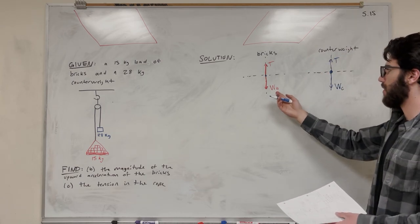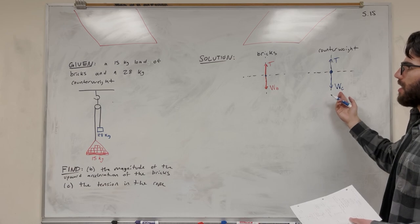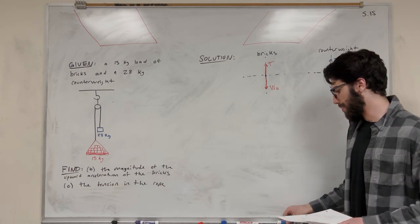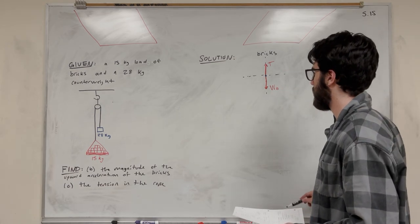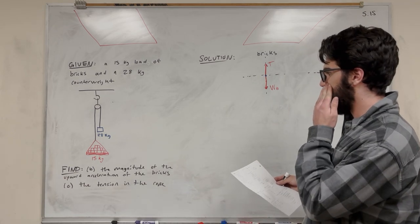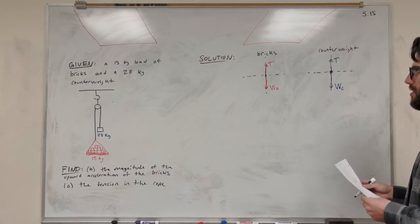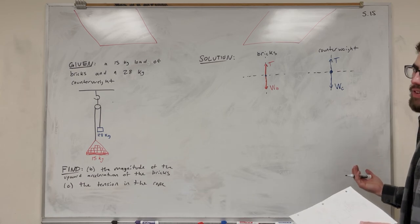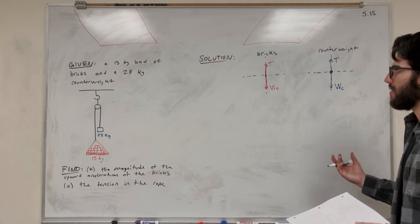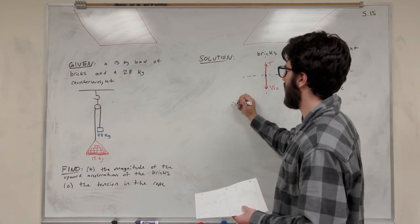So we have three unknowns: the weight of the bricks, the weight of the counterweight, and the tension. Moving on to Part B. We're trying to find the magnitude of the upward acceleration of the bricks, so let's start by finding the weights of both the bricks and the counterweight.